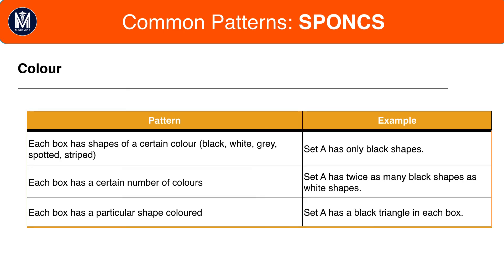Finally, colour patterns. Most shapes in the UCAT tend to be black and white for abstract reasoning. However, at times they bring in grey, spotted, and striped shapes, and when they do, we want to look for colour patterns. Colour patterns tend to be matched with another feature in SPONX. For example, Set A could have two black triangles in every box whereas Set B has two white triangles — here you're matching shape and colour. Alternatively, Set A could have two black shapes and Set B three white shapes, matching colour and number.